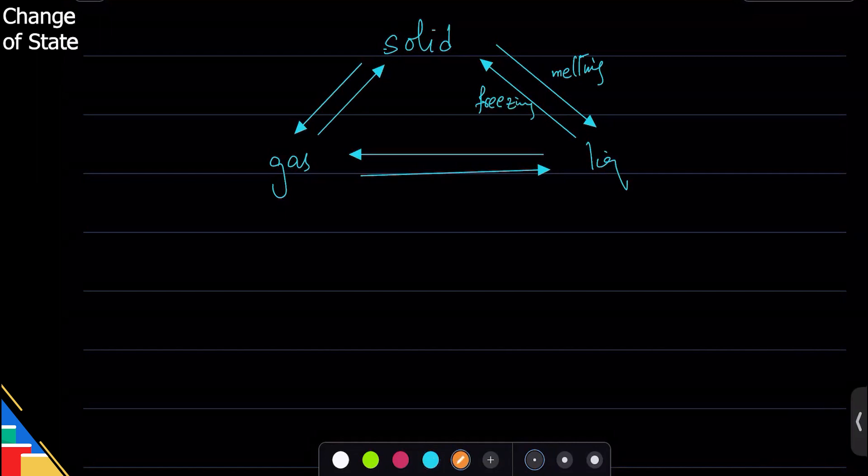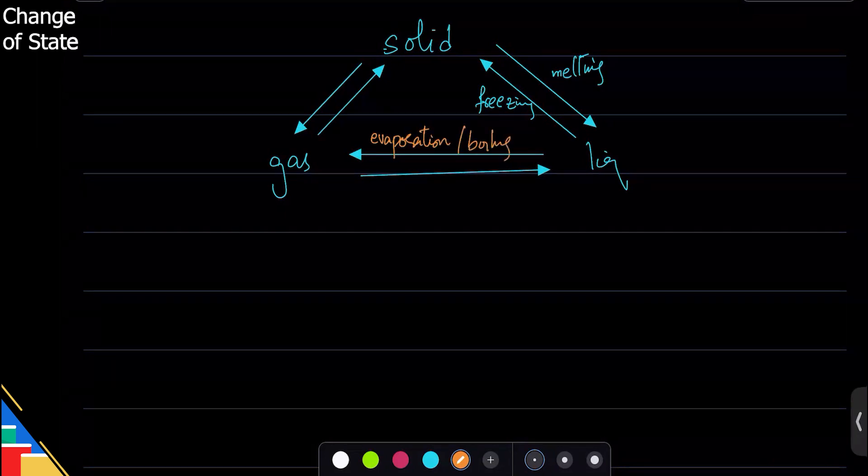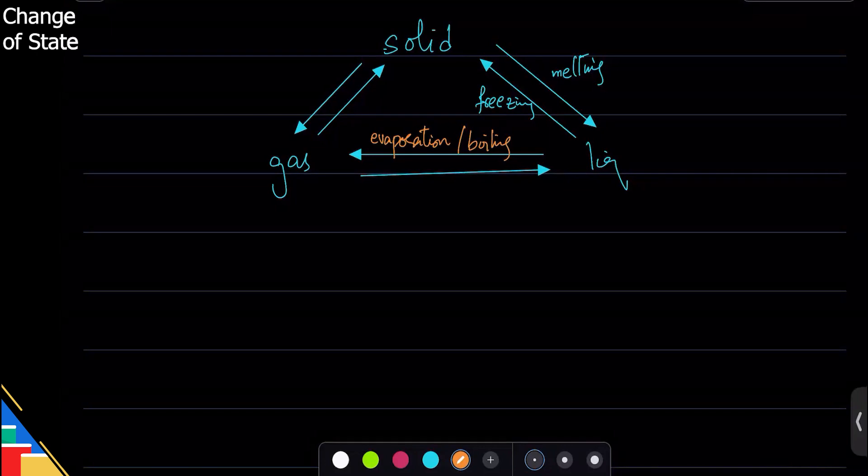Similarly, liquid changes to gas through two processes. What are those? Evaporation and boiling, absolutely. They're two different processes even though the starting and ending states are the same. And gas changes to liquid through condensation.